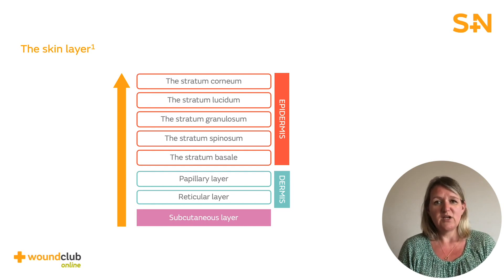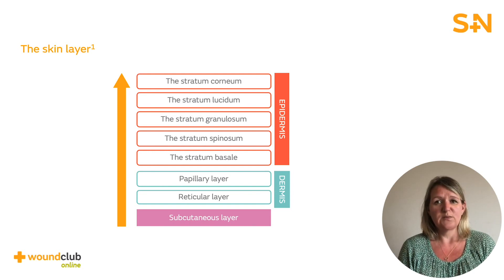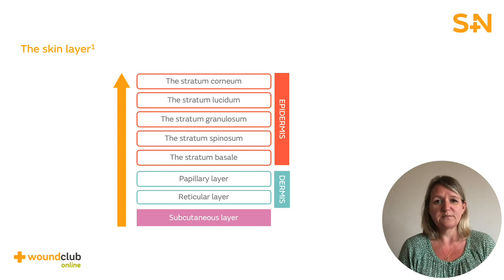Below the dermis is the subcutaneous layer. This layer is made up of connective tissue, fatty tissue and larger blood vessels. It provides support to the dermis, and the fat stored here provides protection and insulation to internal structures.